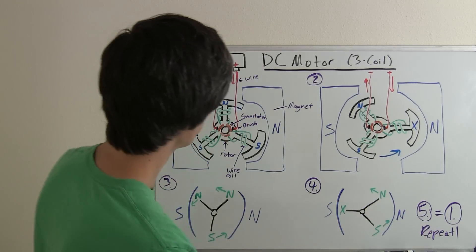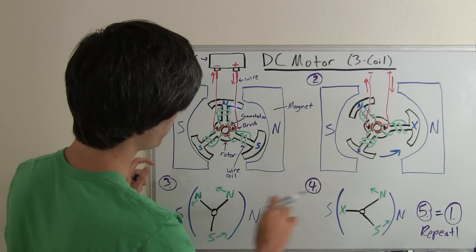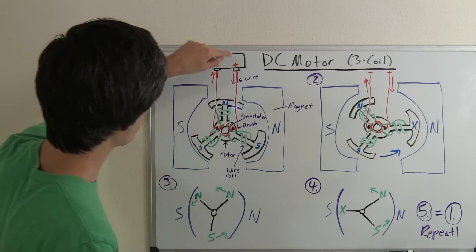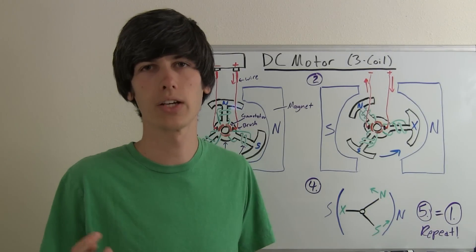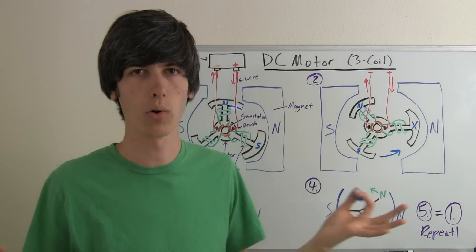So then step five you'll just go right back here and just keep repeating these four steps. So by continuing that current this will continuously rotate this rotor. Hence you have rotation and you have a working motor.